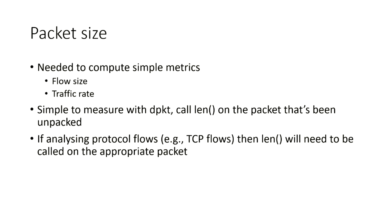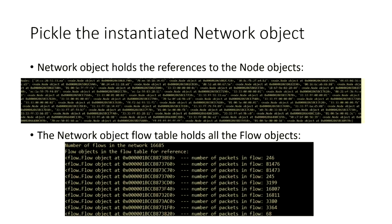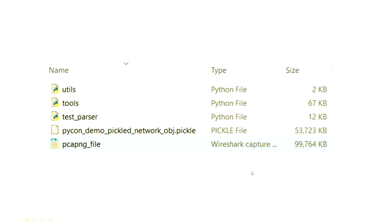For packet size, you need this to compute simple metrics like flow size and traffic rate. It's simple to measure with deep packet — just call len() on the unpacked packet. If you're interested in analyzing specific protocols like TCP flows, then call len() on that specific packet itself. When I serialize the network object, you can see all the node objects and flow objects. When pickled, the extracted information is smaller than the raw file and faster to unpack when feeding it into the machine learning pipeline.